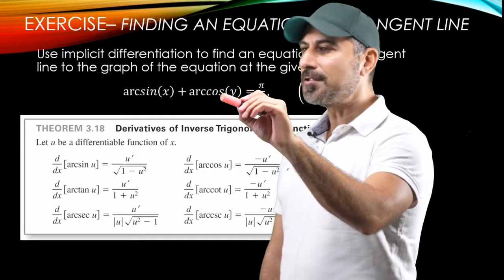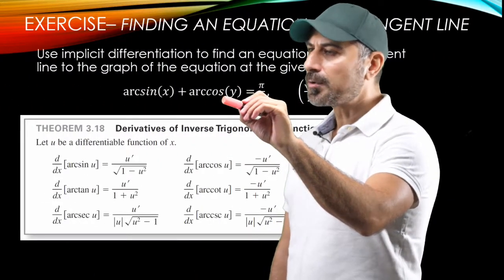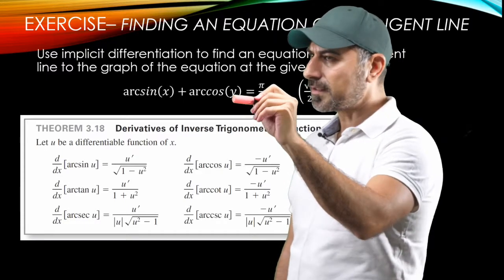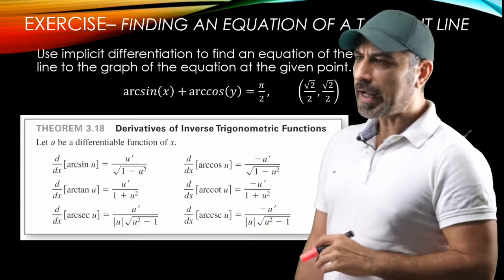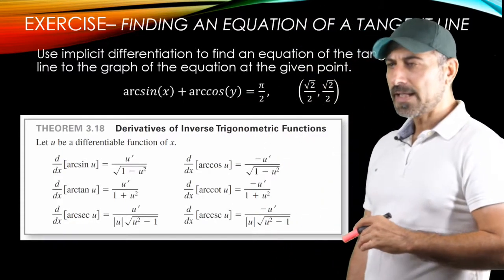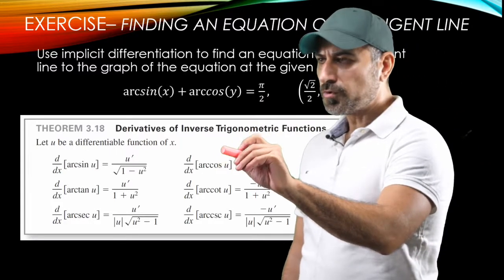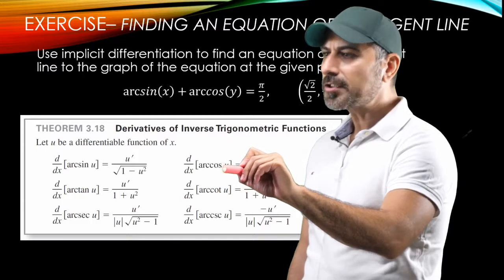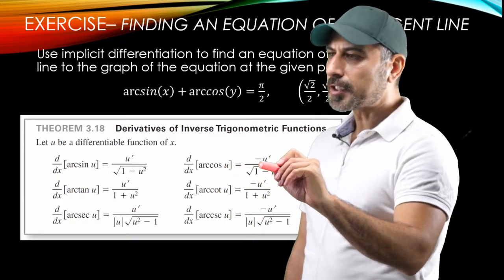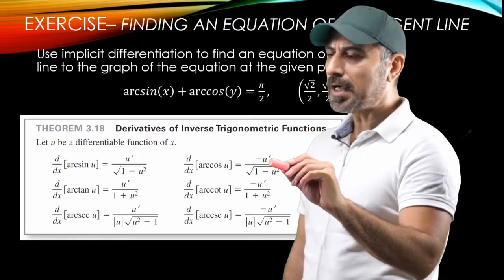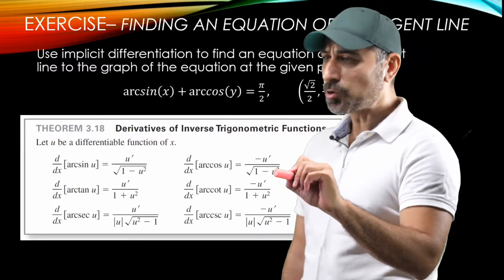And for the derivative of this piece here, we're going to remember that y is a function of x. This is the item that we should never forget in implicit differentiation. So y is going to play the role of u here. So the derivative of arc cosine y is going to be minus y prime divided by radical one minus y squared.